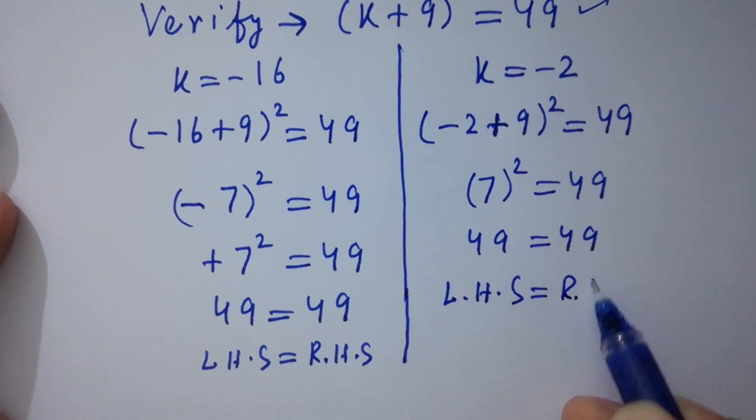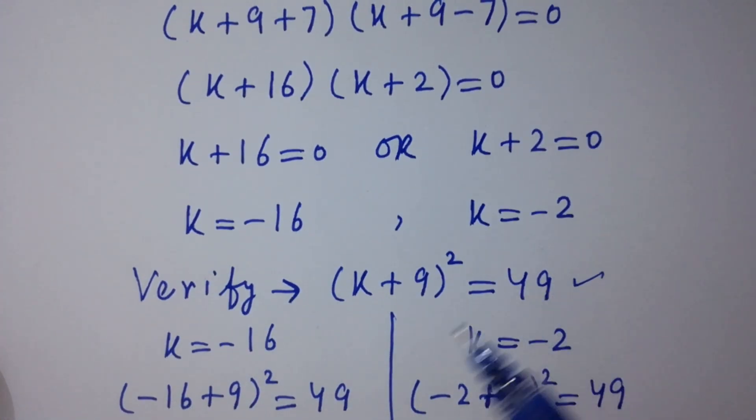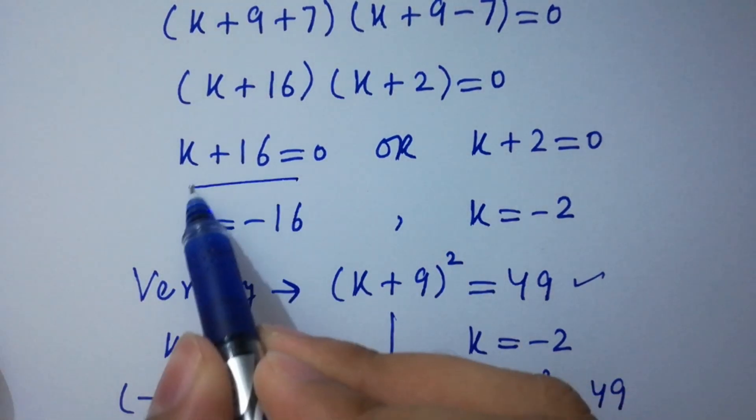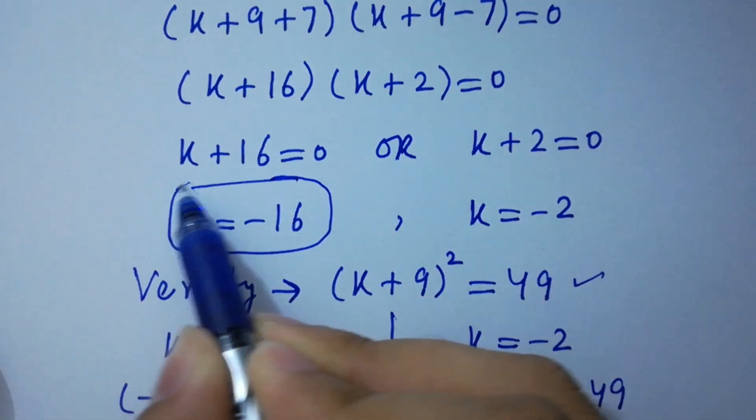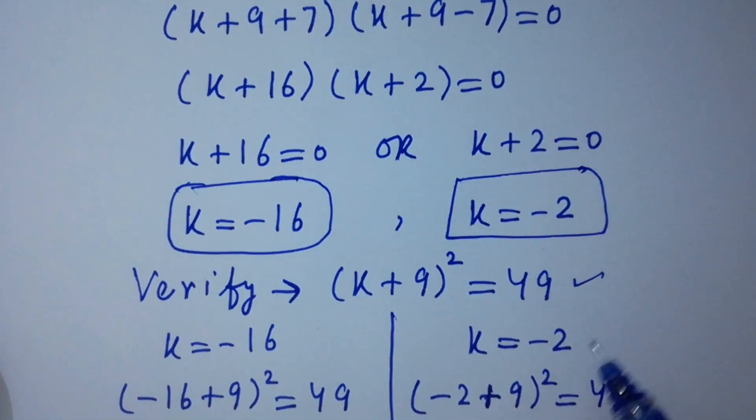Again, left-hand side equal to right-hand side, which shows that the values of k = -16 and also k = -2 satisfies this equation of (k + 9)² = 49.